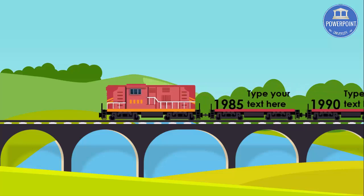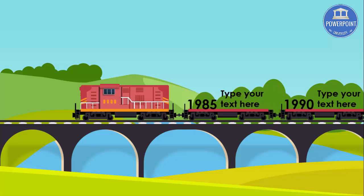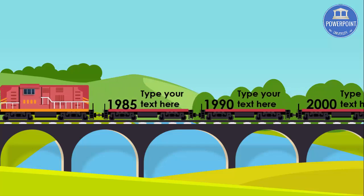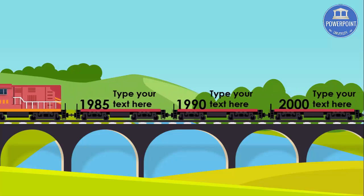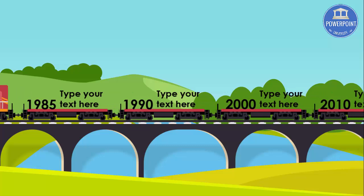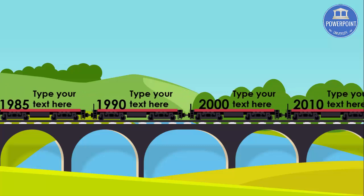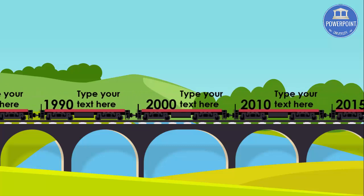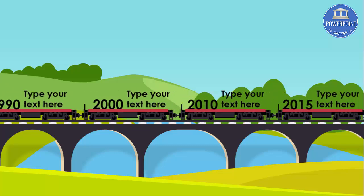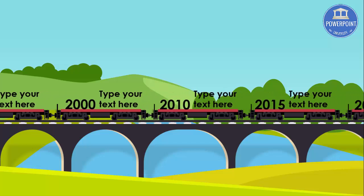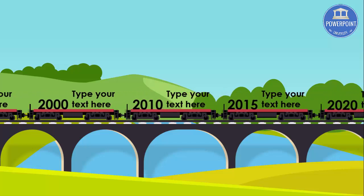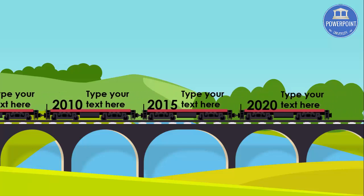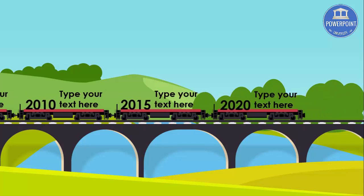You can see here is 1985, you can type your own text, then 1990, then 2000, 2010, and the last 2015 and 2020. Isn't it great to show information in something like this, in a more animated way, a more fun way?